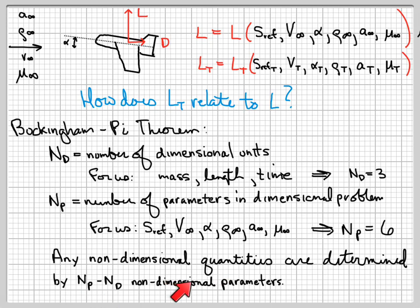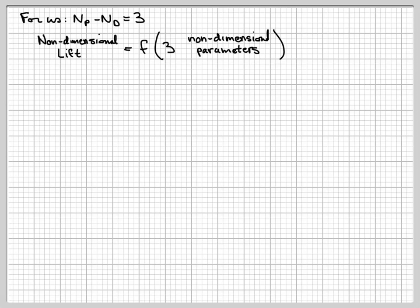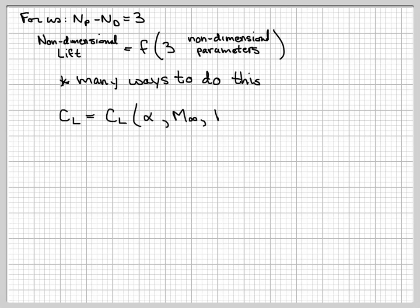The 3 parameters are going to be non-dimensional. Some non-dimensional version of the lift is a function of 3 non-dimensional input parameters. In aerodynamics, we use the lift coefficient as the non-dimensional lift. The 3 parameters we tend to work with are the angle of attack, which is already non-dimensional, the Mach number, and the Reynolds number. The Mach number is the ratio of the velocity of the air — or the velocity of the aircraft — to the speed of sound in the air.